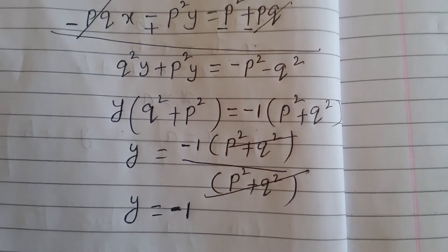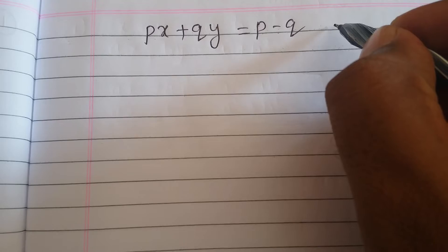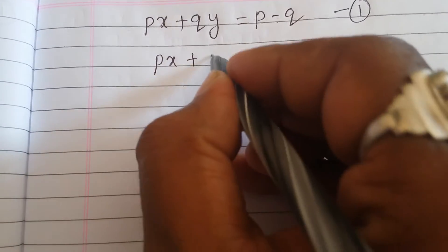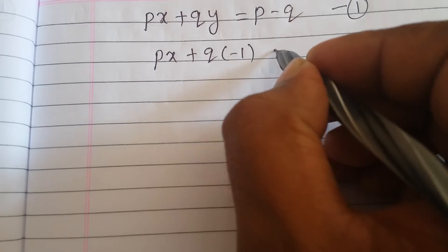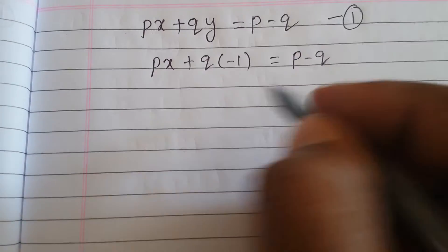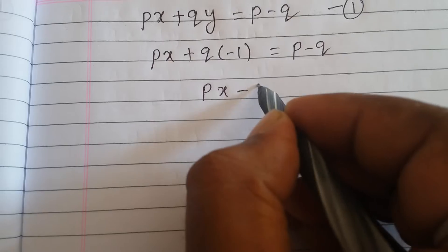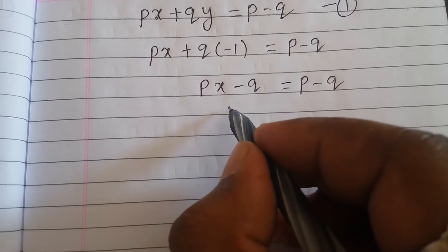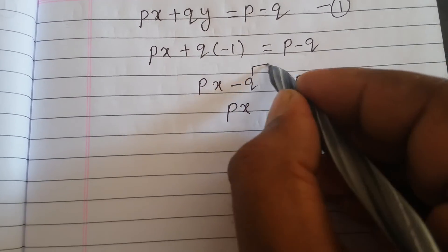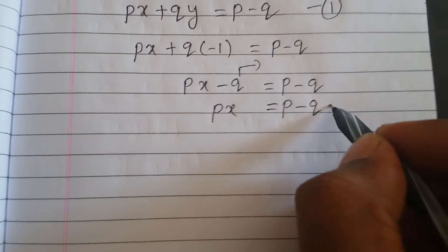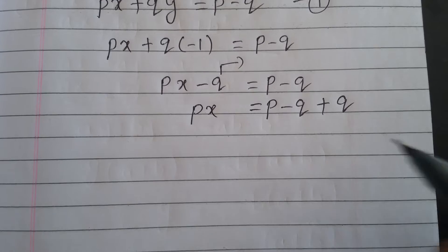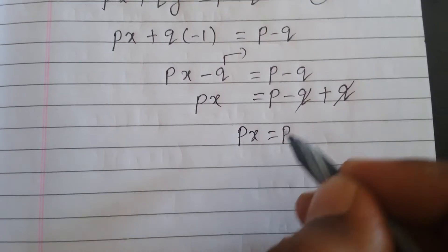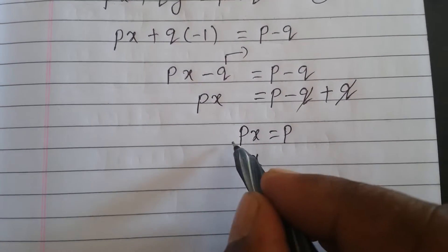Now we have to find the value of x. Substitute y equals minus one into equation one. So px plus q times (minus one) equals p minus q, which gives px minus q equals p minus q. Transposing minus q to the right side, it becomes plus q.